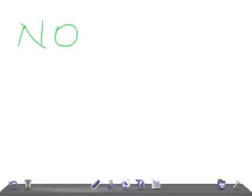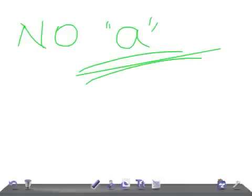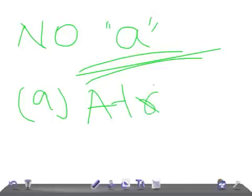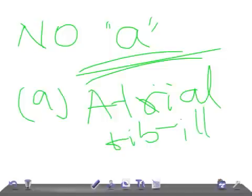Another condition is absent A wave — there is no A wave. No A wave means no unifocal atrial depolarization. Where do you see absent A waves? It is nothing but atrial fibrillation. The atria are in fibrillation mode, so no pressure is reflected to the internal jugular vein and you don't see any A wave.